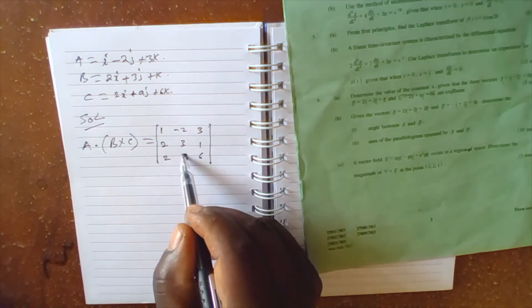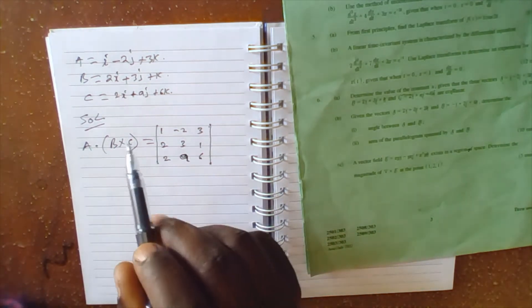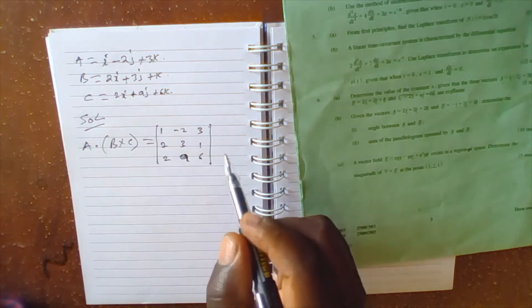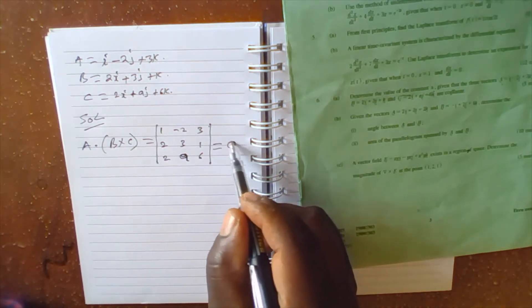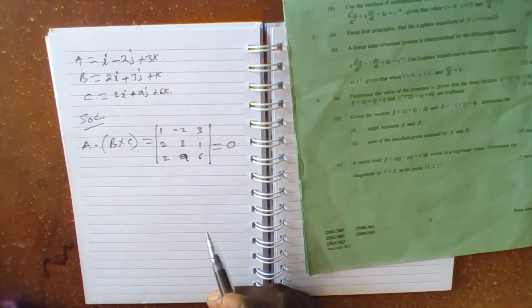This is A. Now if the three vectors are coplanar, then the determinant must be equal to zero.